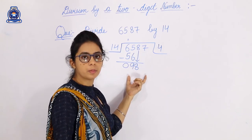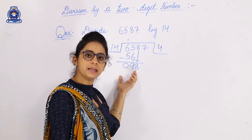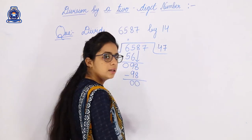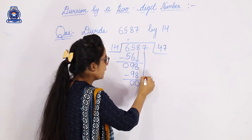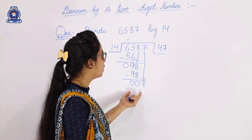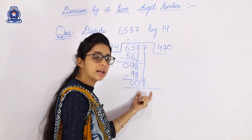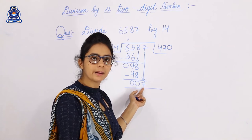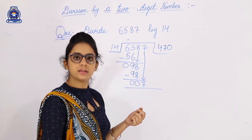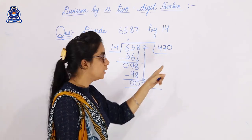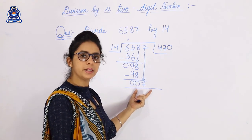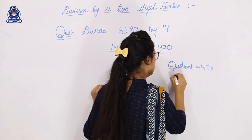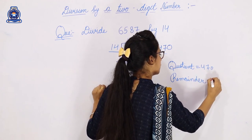For division, the tables are a must - you have to learn tables at home. 14 sevens are 98. We subtract 8 minus 8 equals 0, 9 minus 9 equals 0. We carry the 7. 14 doesn't divide into 7, so it remains 0. Our quotient equals 470 and remainder equals 7.